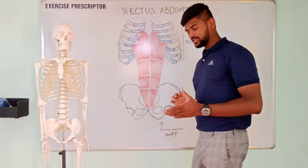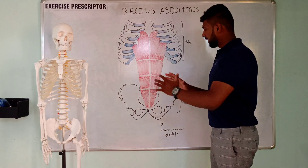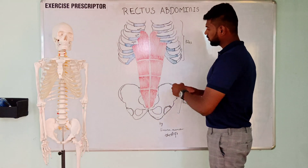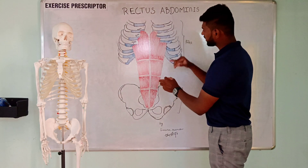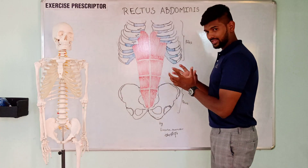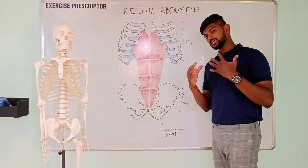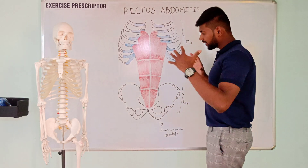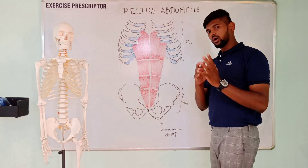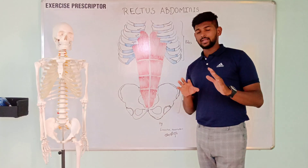The second movement is lateral flexion of the trunk at the spinal joint. Because rectus abdominis muscle fibers are running in a lateral direction, pulling from insertion to origin can create lateral flexion of the trunk at the spinal joint. However, rectus abdominis is more oriented toward the midline, so it has a weak lever arm and poor mechanical advantage to create this movement forcefully.